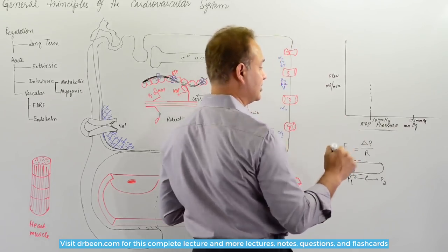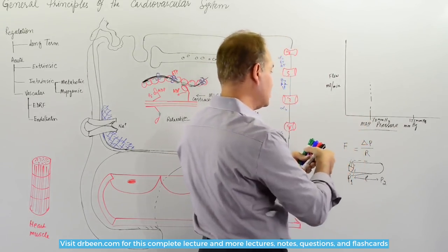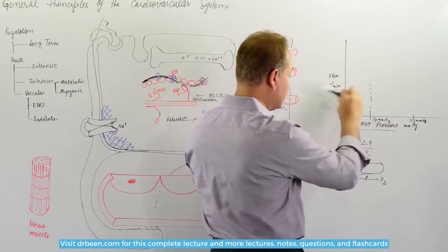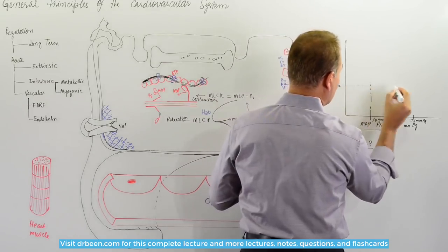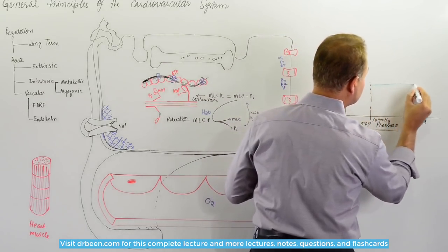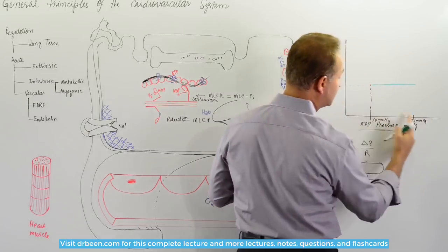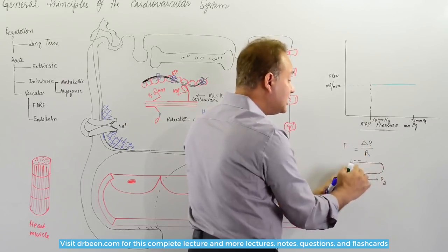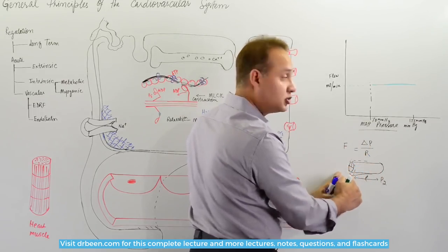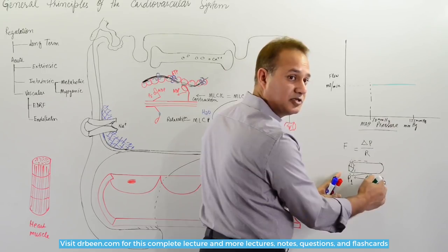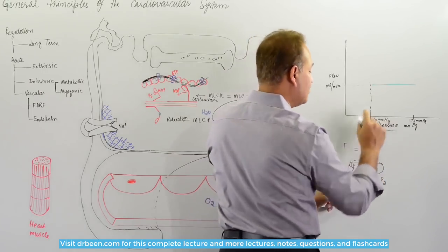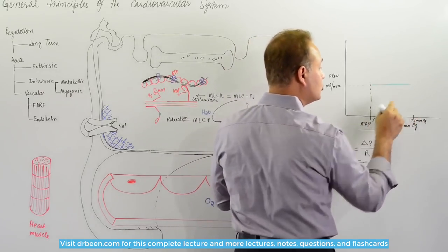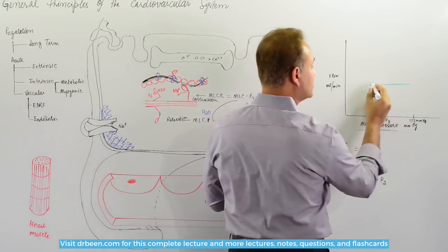This is mean arterial pressure. Our body has this magical quality to keep the blood flow constant over this range of pressure. So pressure in a blood vessel can change from 70 mean arterial pressure to 175 mean arterial pressure, and even then, the blood vessel can continue to have a constant flow.